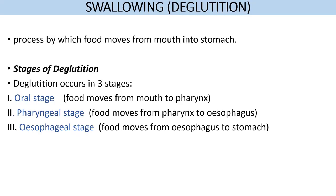Deglutition, also called swallowing, is the process by which food moves from the mouth into the stomach. There are three stages of deglutition: the oral phase, pharyngeal phase, and esophageal phase. In the oral phase food moves from the mouth to the pharynx; in the pharyngeal stage food moves from the pharynx to the esophagus; and in the esophageal stage food moves from the esophagus into the stomach.